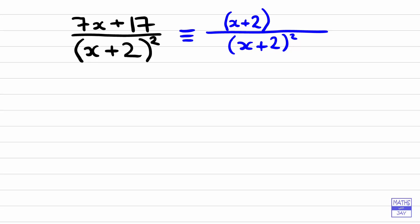And now what we want to do is think about what do we need to multiply that by to get 7x plus 17. Or certainly to get the 7x, the 17 we can deal with at the end. So if we've got an x in that bracket, well we just need to multiply that by 7.